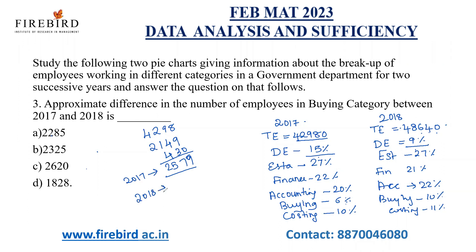In 2018, buying is 10% of 48,600, which is 4,864 employees. So the difference is 4,864 minus 2,579. Subtracting: 4 minus 9 (borrow) gives 5; 15 minus 7 gives 8; 7 minus 5 gives 2. The result is approximately 2,285 employees — that is the difference in buying between both years.